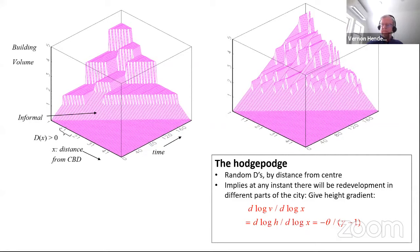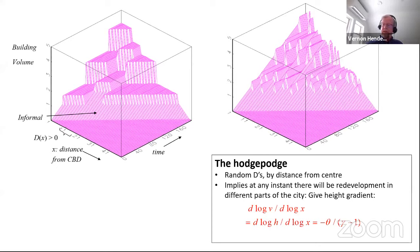On gentrification: in Beijing you have traditional courtyard neighborhoods where there's now a market-driven attempt to gentrify — people want this old-style housing and modernize it — while the government thinks they're unsightly and wants to tear them down. But that's not really gentrifying slums. I'll talk later about slum upgrading and the issues around that, which we don't really have in the developed world.